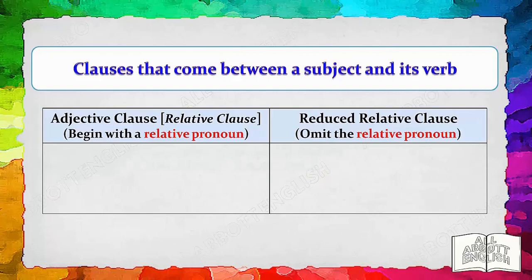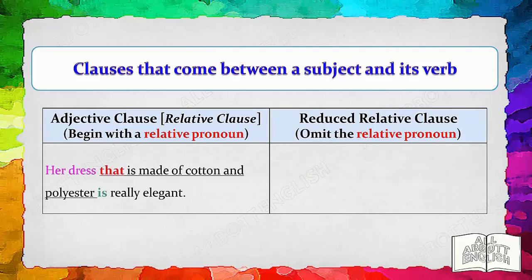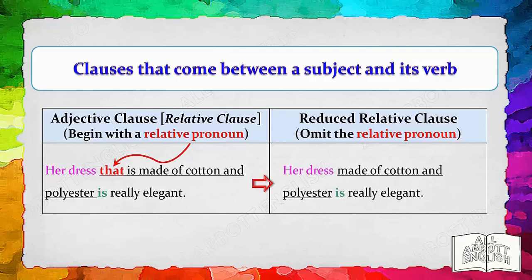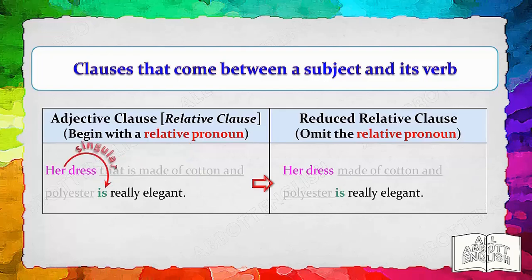Let's look at another example. 'Her dress that is made of cotton and polyester is really elegant.' 'That is made of cotton and polyester' is a relative clause, or adjective clause, beginning with the relative pronoun 'that.' The relative clause can be reduced by removing 'that.' By mentally removing the clause, it is easier to match the subject with its verb. 'Her dress' is a singular subject — it matches the singular verb 'is.' Therefore, 'her dress is really elegant.'